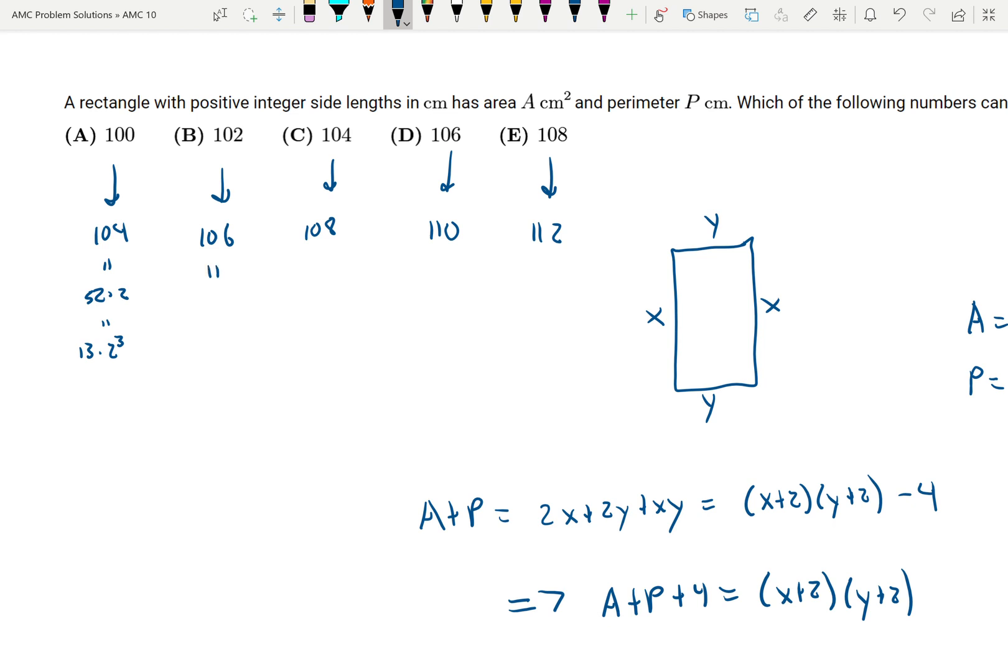Now we look at 106, and what's interesting here is it breaks into 53 times 2. That is the prime factorization because 53 is a prime number. So let's see what happens when we try to write 53 times 2 in this format here.